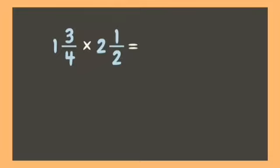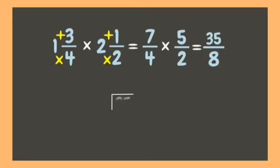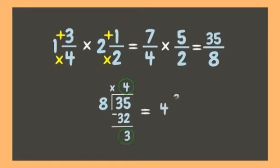Now let's go back. Change each mixed number into an improper fraction. Four times one is four, plus three is seven — over four. Next, two times two is four, plus one is five — over two. Now multiply: seven times five is 35, four times two is eight. Our answer 35/8 is improper, so we convert it: 35 divided by eight is four remainder three. Our answer is four and three-eighths.